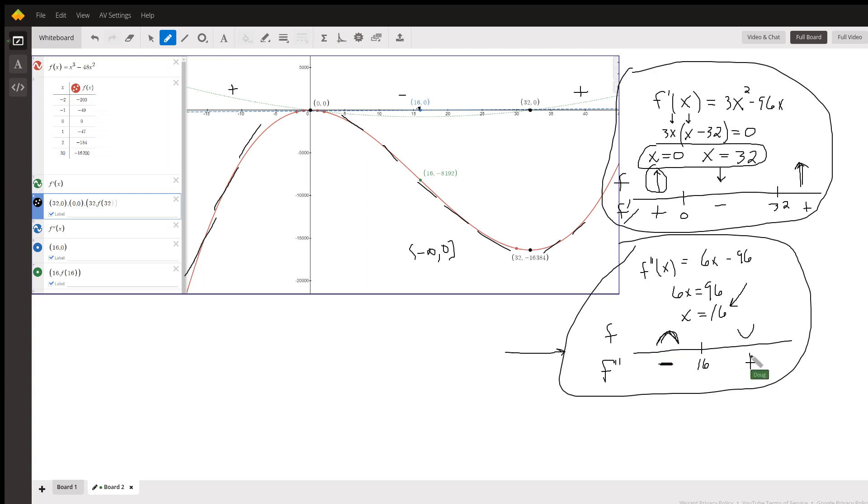To the right of 16, like putting in the 17 here or 20, we get a positive number. Think of a smiley face, concave up. And that means since the concavity changed that this x value produces a point of inflection. So there's a point of inflection right there.